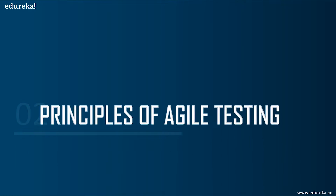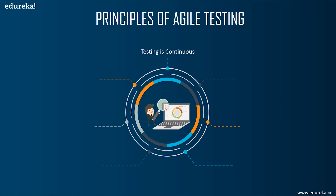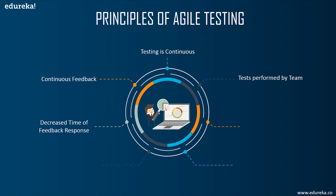The first principle is that testing is continuous — the agile team tests continuously because it is the only way to ensure continuous progress of the product. The second is continuous feedback — agile testing provides feedback on an ongoing basis, ensuring the product meets business needs and customer requirements. Third, tests are performed by the whole team — not just the test team, but developers and business analysts as well. Fourth, decreased time of feedback response — the business team is involved in each iteration and continuous feedback shortens response time.